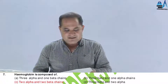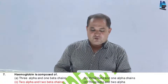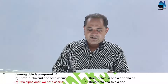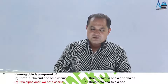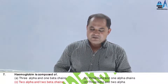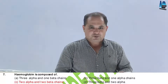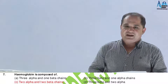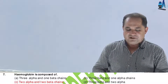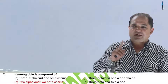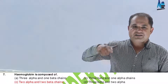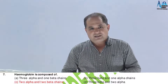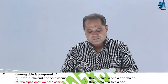Question number 7. Hemoglobin is composed of: Option A, 3 alpha and 1 beta chain; B, 3 beta and 1 alpha; C, 2 alpha and 2 beta chain; D, 3 beta and 2 alpha. Answer should be 2 alpha and 2 beta — that is option C. We have discussed this in the quaternary structure of proteins.